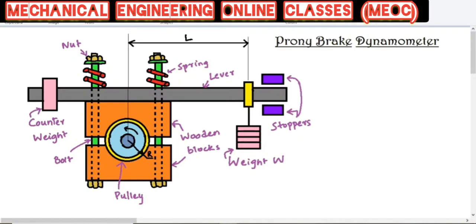The figure shows a Prony brake dynamometer, which is the simplest of all the absorption type dynamometers. It consists of two wooden blocks shown in brown. There is a revolving brake drum or pulley, and this pulley is fixed to a shaft of an engine whose power is to be measured.